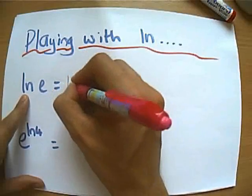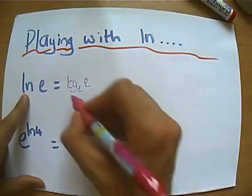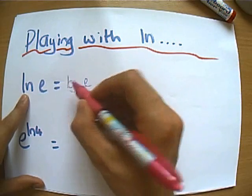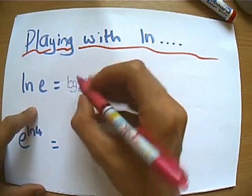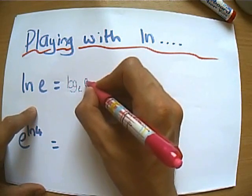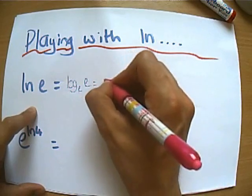Let's remind ourselves what does logarithm or ln stand for. What that means is log base e of e, and what does that mean? That means what power do I raise e by to get e? So let's think about that. e to the power of what will give me e?